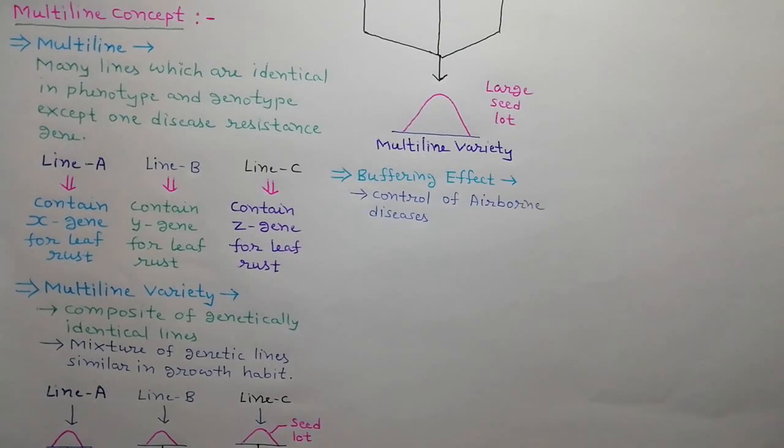In the event of occurrence of a new race, some plants may be susceptible but not all. This mixture of susceptible and resistant plants provides a buffering effect against rapid disease development and thus extends the life of resistant genes.